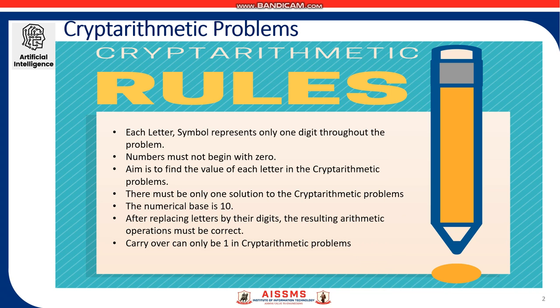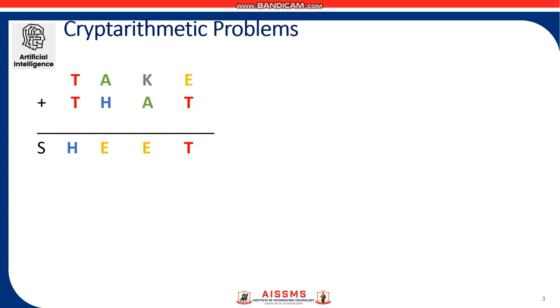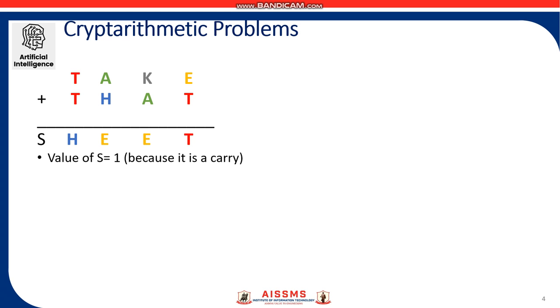Let us take an example. TAKE plus THAT is equal to SHEET. For 0 to 9 numeric characters, let us find the corresponding codes. There are four alphabets in row 1 as well as in row 2, but the answer has five alphabets. So the leftmost alphabet that is S represents carry and the sum can be 10 or greater than 10 up to 19. So the value of S is 1 and replacing it in the problem.